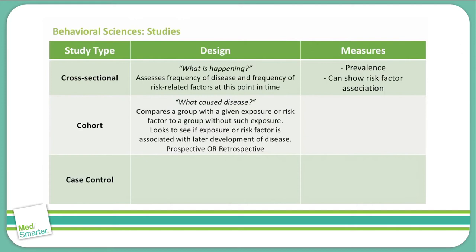Cohort studies can be prospective, meaning we look ahead into the future, or retrospective, meaning at this point in time a patient has a disease and we look back to see if, in their history, they had any exposure to a certain chemical, carcinogen, product, or environment.